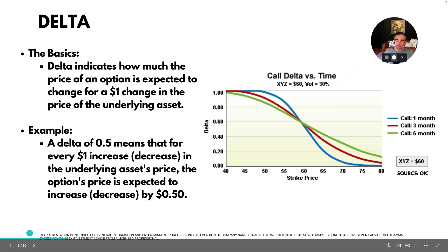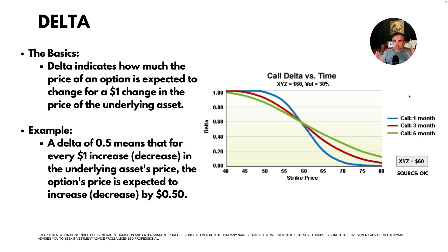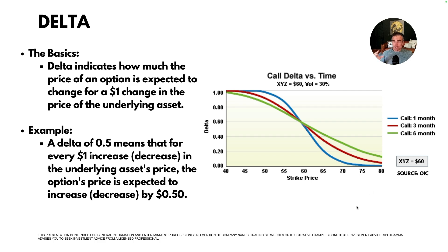Let's start with Delta. The reason we're starting with Delta is because Charm and Vanna both describe changes to Delta over time or over volatility. Delta tells us how much the price of an option is expected to change for a $1 change in the underlying stock. If you have a call option that has a 50 Delta and the stock goes up a dollar, your option is expected to go up 50 cents. As you can see on this chart showing call Delta for different options over different time, Delta is dynamic — whether you have more time to expiration or your strike is higher or lower, that can dictate what the Delta of your option is. The sensitivity of the option changes over time.